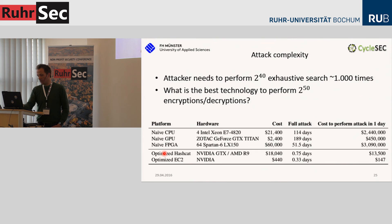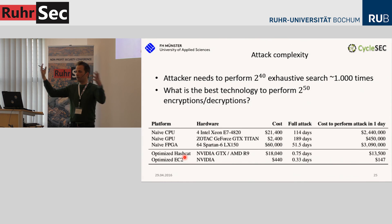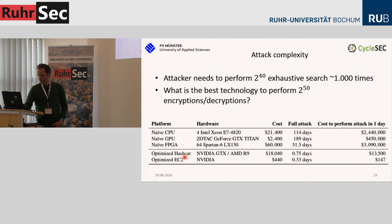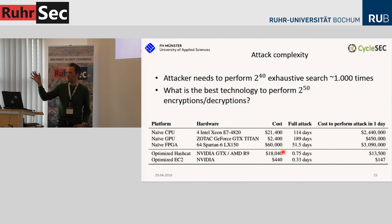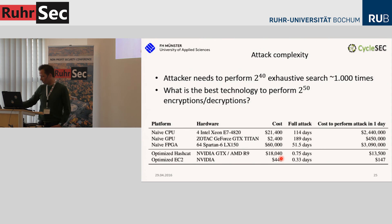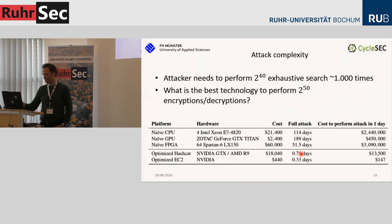Hashcat offered us their cluster — a large array of different GPUs. We also ran it on Amazon and found we can break a single TLS connection for $440. The Hashcat cluster costs approximately $18,000 to buy outright, but that's a flat rate. So $440 is what it costs to perform a single DROWN attack, and it can be done in three-quarters of a day — about 18 hours per connection.